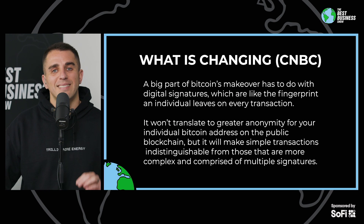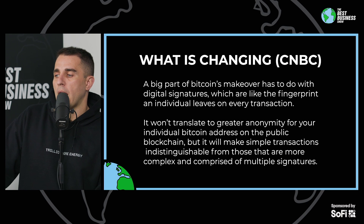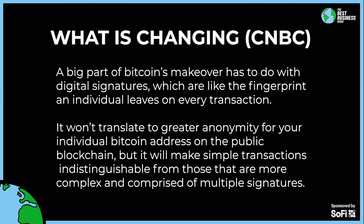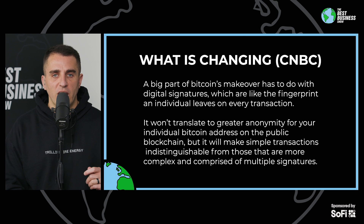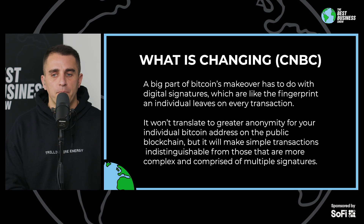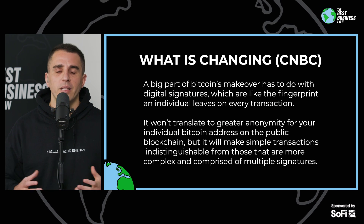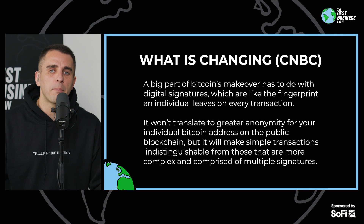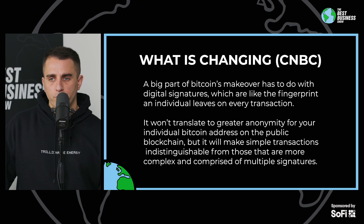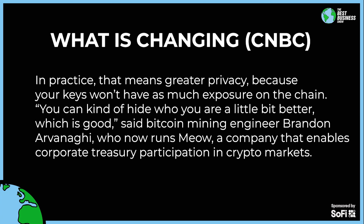Looking at the non-technical CNBC overview, a big part of Bitcoin's makeover has to do with digital signatures, which are like a fingerprint on every transaction. It won't translate to greater anonymity for your individual Bitcoin address on the public blockchain, but it will make simple transactions indistinguishable from those that are more complex and comprised of multiple signatures. In practice, that means greater privacy because your keys won't have as much exposure on the chain — you can hide who you are a little bit better.